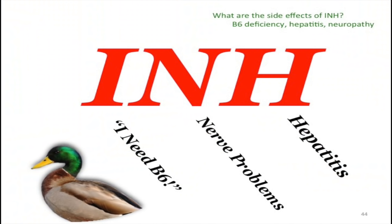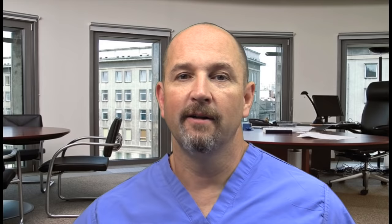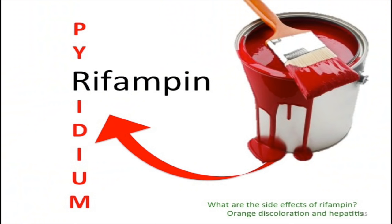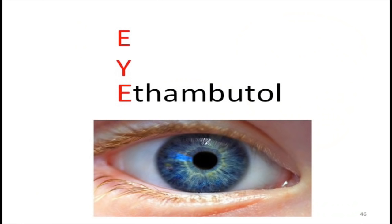INH — isoniazid. The mnemonic: I need B6. Pyridoxine (B6) deficiency goes with isoniazid. N is neuropathy, H is hepatitis. Also, INH is one of six medicines that will give you a lupus-like rash. Pyridium and rifampin both turn secretions reddish-orange. Ethambutol — just know it can give you optic neuritis.